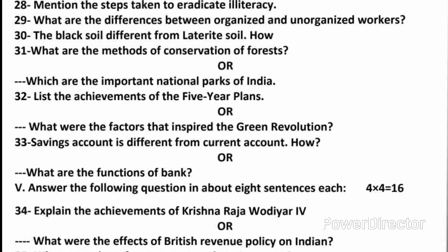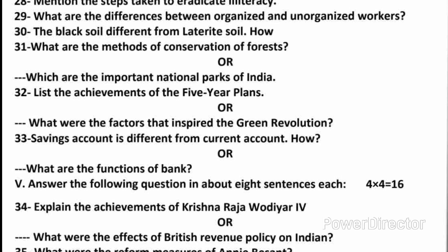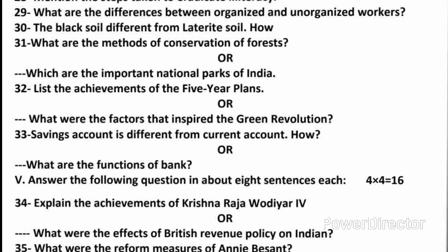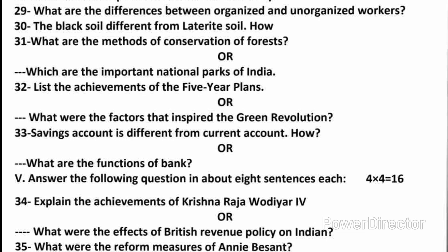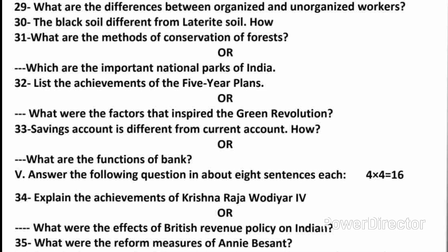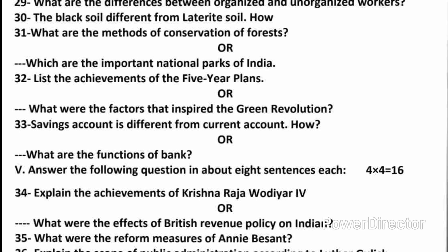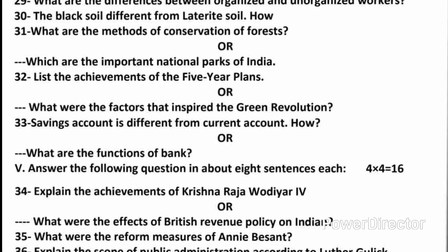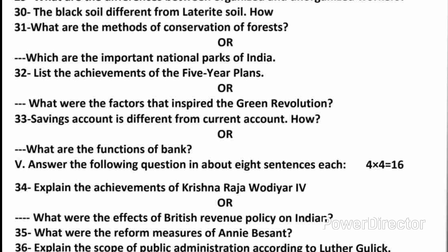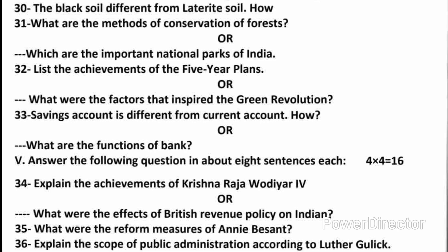Answer the following questions in about eight sentences each. Question 34: Explain the achievements of Krishnarajawodiyar IV. Answer: He was very much interested in spreading education among his people. He abolished fees in all primary schools to develop primary education. He helped girls' education. He started the University of Mysore and also started scholarships for students continuing education in foreign countries. New railway lines were laid. Many small and large-scale industries were started. Legislative council was formed, which was a great step in legislative measures. Mahatma Gandhiji called him Rajashree.